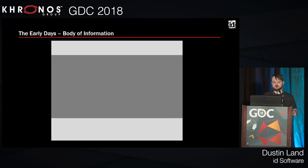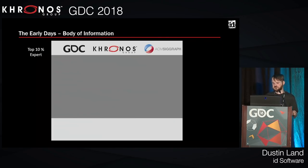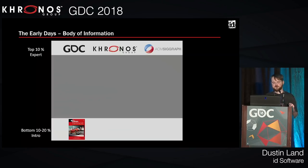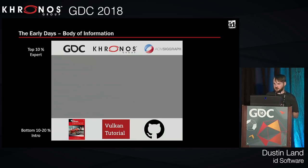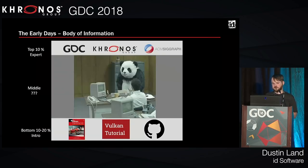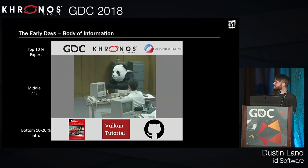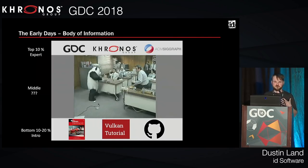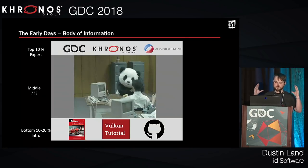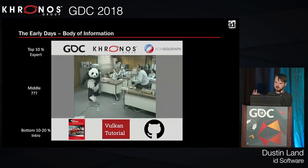This was exacerbated by the body of information available in the early days. I'd say the top 10% were expert talks given at events such as these, and the bottom 10-20% is introductory — things people are hitting on Google such as Graham Sellers' book or tutorial sites with their SEO magic. There were some really good GitHub repos, such as from Sasha Willems, regarding all the different features. But really there wasn't much in the middle, and I think that's where a lot of the pain and frustration came from. It's kind of the old joke: how do you build a renderer? You get a black screen first, then a colored triangle, a textured cube, and then you write everything else.